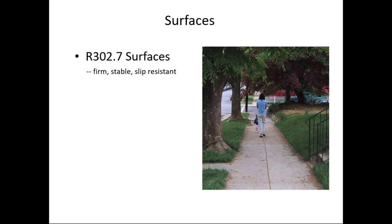Moving on to surfaces. ProAg is general: surfaces should be firm, stable, and slip resistant. Acceptable surfaces include concrete, asphalt, and wooden boardwalks or ramps with appropriate slip resistance built in. Loose stone, mulch, grass, and bare earth are not accessible surfaces because they won't remain firm and stable under all conditions — bare earth that's baked hard in summer or frozen in winter becomes soft and impassable after rain or thaw.